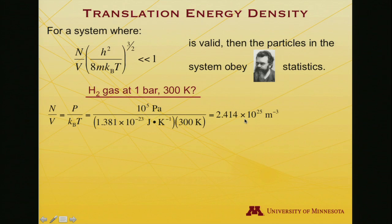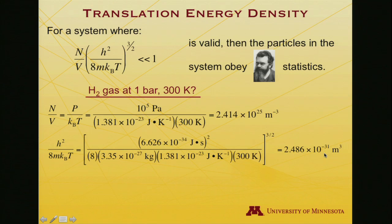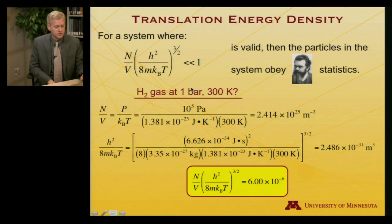And that allows us, then, to derive the pressure in SI units would be 10 to the fifth Pascal. The Boltzmann's constant is expressed here and the temperature. And, that all adds up to 2.414 times 10 to the 25th per cubic meter. Meanwhile if we evaluate the quantity in parentheses, we have h squared over 8 mKT, here's Planck's constant squared, 8, the mass of molecular hydrogen is 3.35 times 10 to the minus 27th kilograms. Here is Boltzmann's constant, here is 300 Kelvin again. And, the net, when raised to the 3 halves power, 2.486 times 10 to the minus 31st cubic meters. Multiplying these two quantities together, we end up with the full expression is equal to 6 times 10 to the minus 6th, right, so 6 one millionths, which certainly is a great deal less than 1, and hence we would expect Boltzmann statistics to be satisfied for hydrogen gas at this pressure.